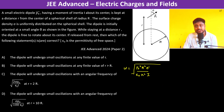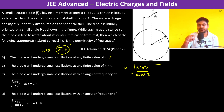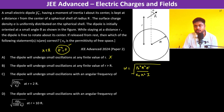Now let's go to the options. Option A: the dipole will undergo small oscillations at any finite value of r. This is wrong, because at r less than R the electric field is zero, so there is no torque — p × E = 0. Therefore, option A is not correct.